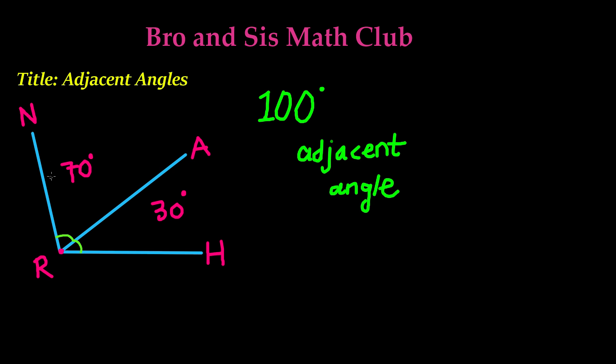So as you can see, the first angle, which is 70 degrees, is NRA. And the point where it's meeting, or the corner point, is R. And our second angle, which is 30 degrees, is ARH. And once again, the corner point where the angle forms, the vertex, is also the point R.